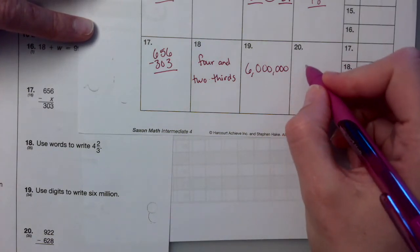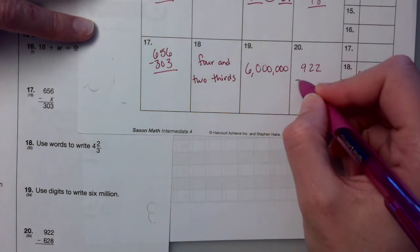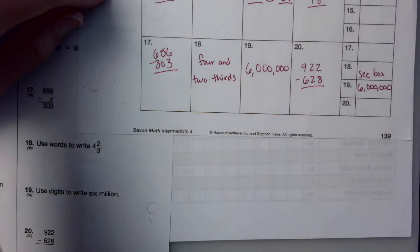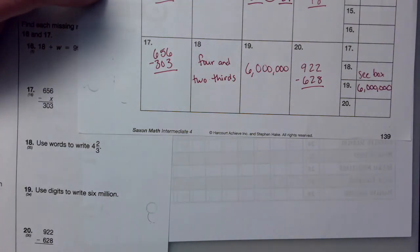And then 20, go ahead and subtract. 922 minus 628. Alright, excellent. When you're done, put it back in your Friday folder.